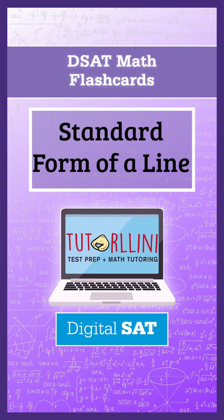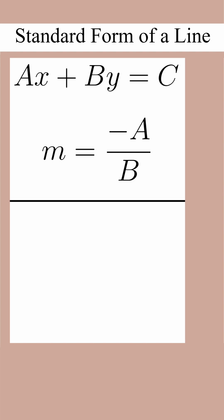Digital SAT Math flashcards, standard form of a line. Standard form of a line is ax plus by equals c. The slope is negative capital A over capital B.